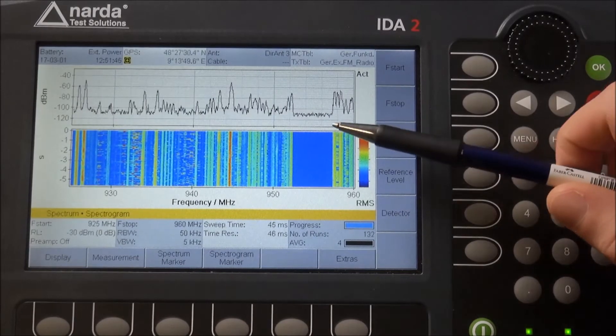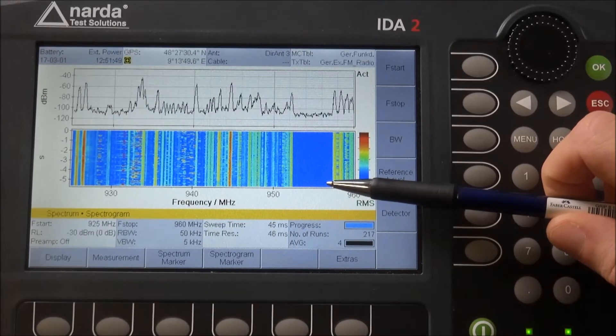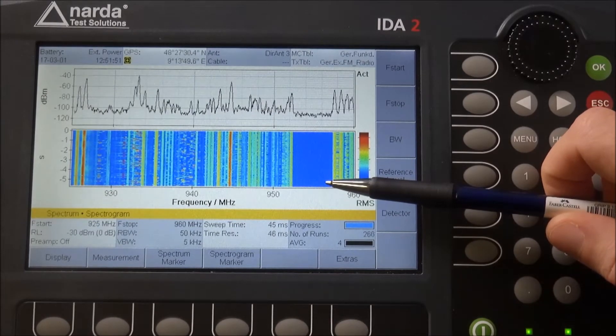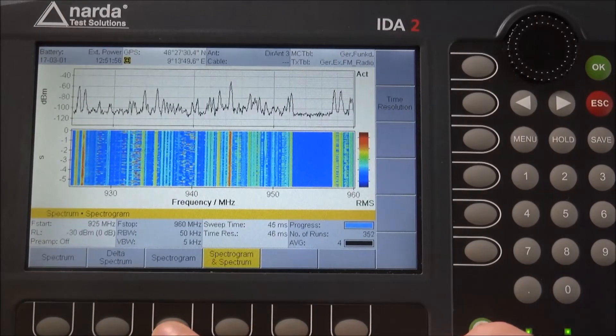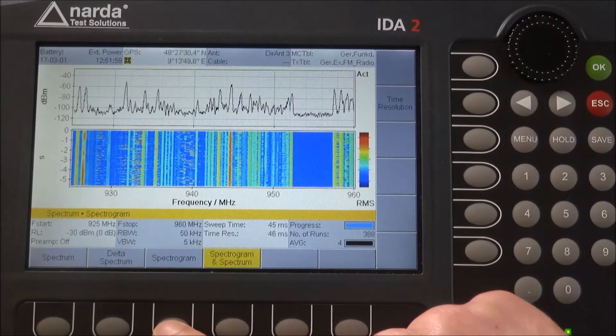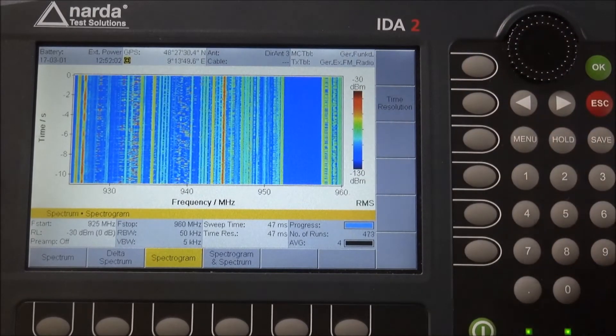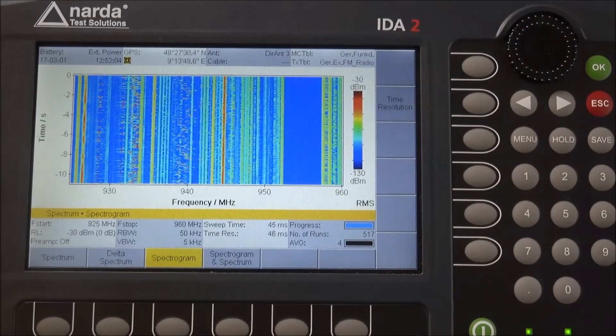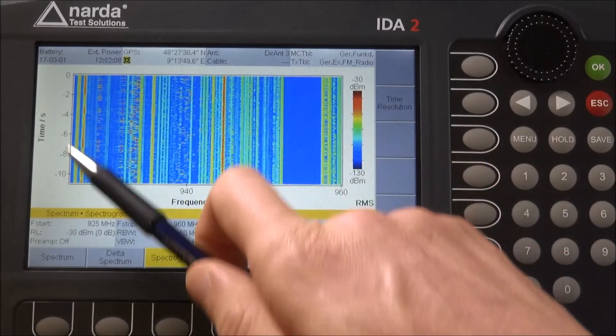If you want to show some sort of long-term spectrogram, you can activate the spectrogram only so that you have a longer or larger view on the spectrogram. This still correlates to the sweep time.